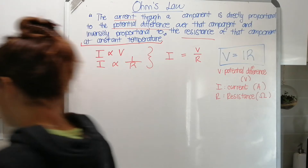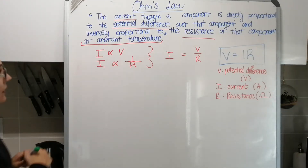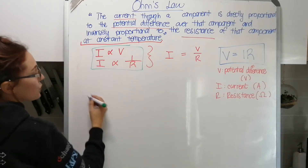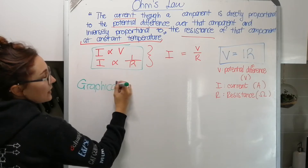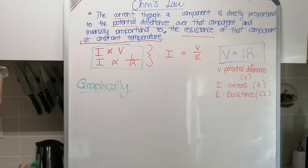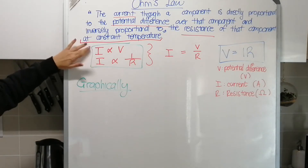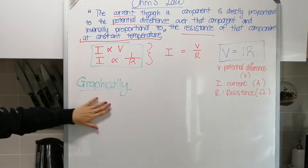Graphically, occasionally - especially in grade 11 or 12 - they might ask you graphically what does this look like. You get that from this. Remember in the first few lessons of the year, grade 10s, and grade 11s about halfway through term one, we looked at how inverse and direct proportion relationships look graphically.